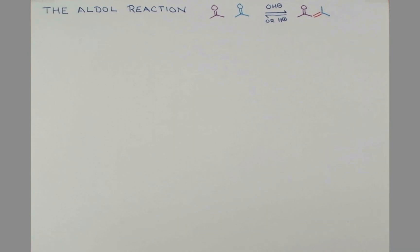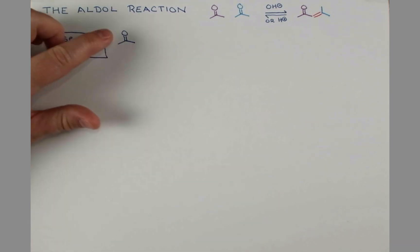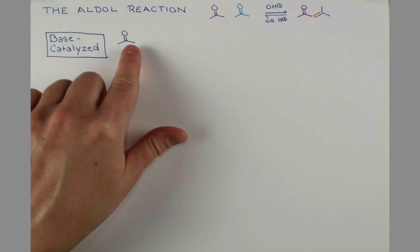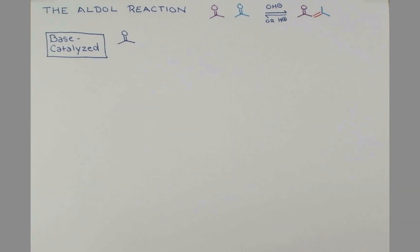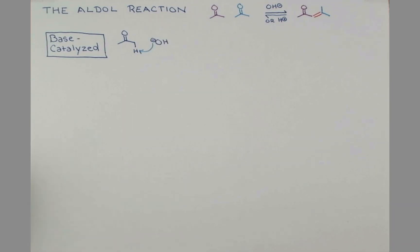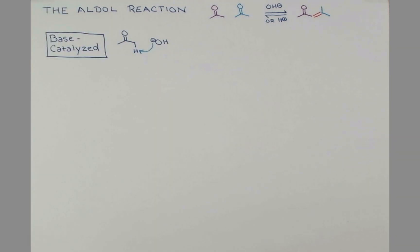Let's look at how this reaction works beginning with the base-catalyzed mechanism. Here's our first molecule of acetone. Because of the dipole in this molecule and the resonance we can draw, the hydrogen atoms on this carbon here are somewhat acidic. So our base can come in and deprotonate this hydrogen atom. And I'm going to show this bond becoming a lone pair on the carbon atom right here.